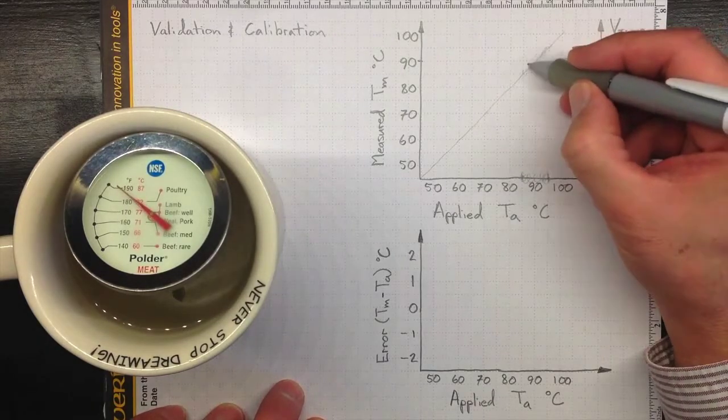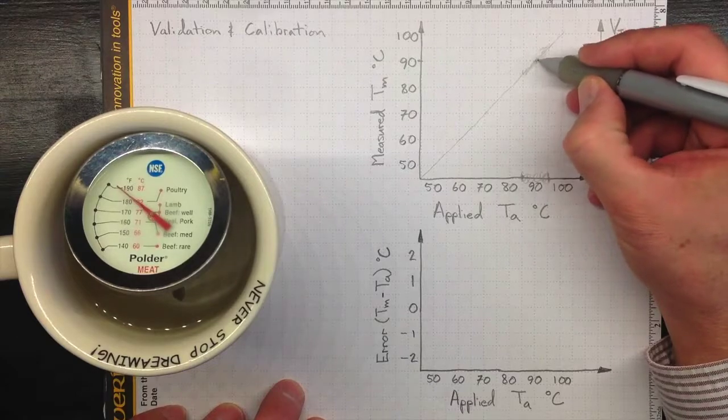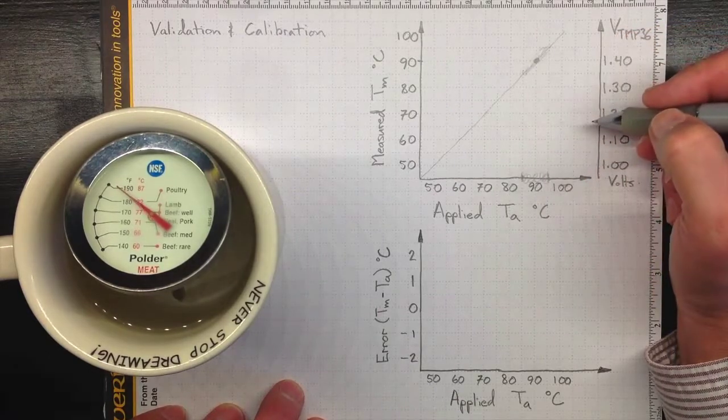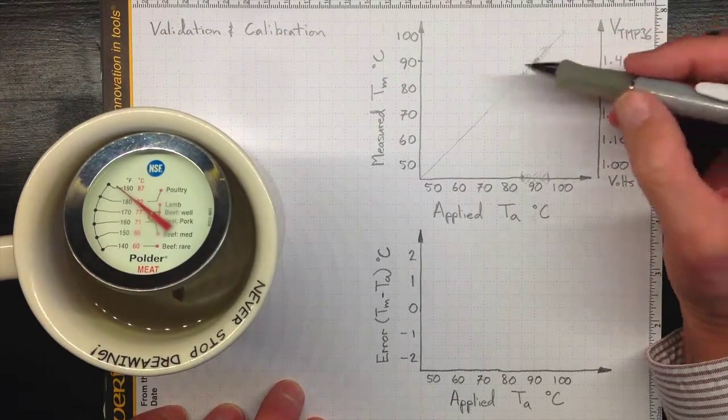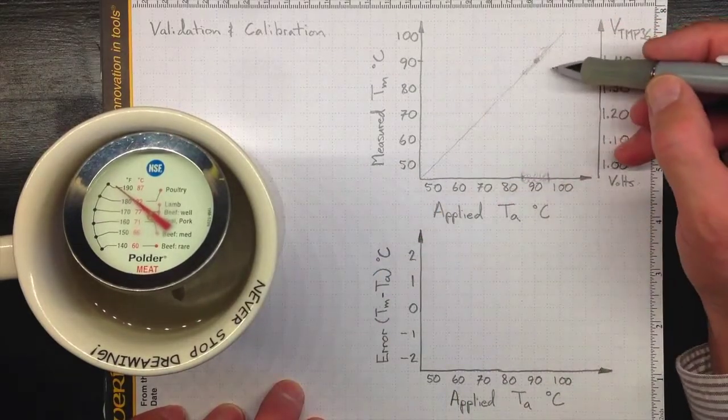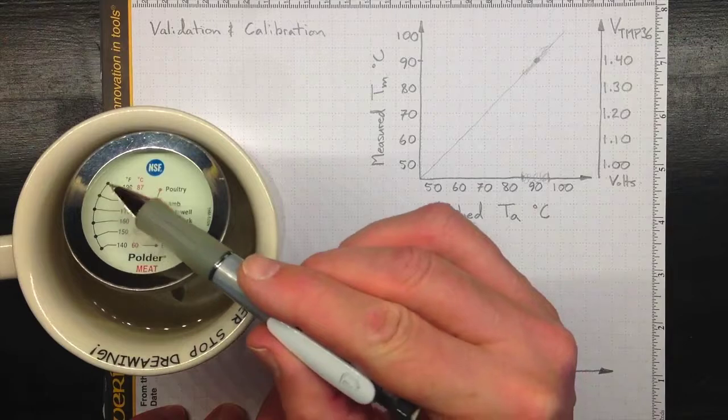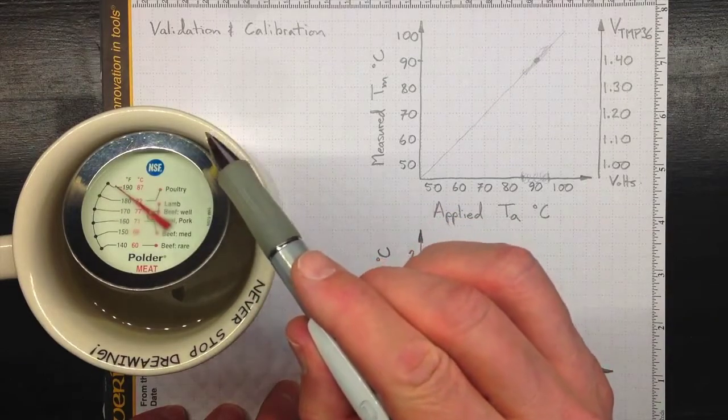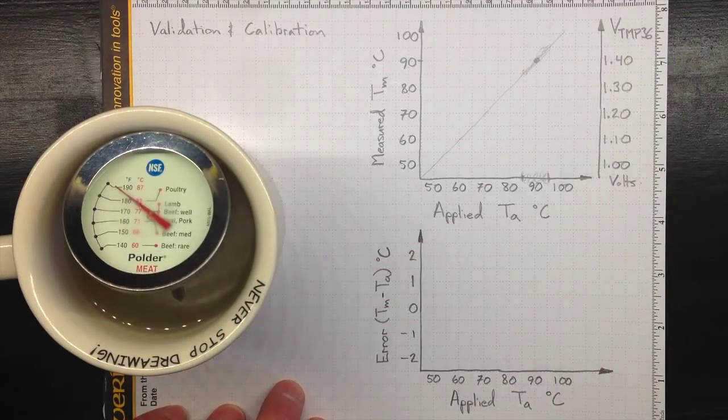So, somewhere along there, we've got that data point. This gives us an idea that the thermometer is functioning, it is giving a reasonable answer, and the value does go up when we apply a higher temperature.